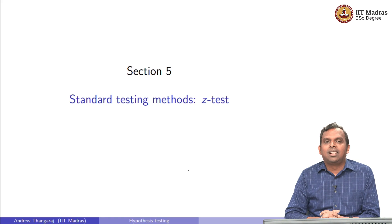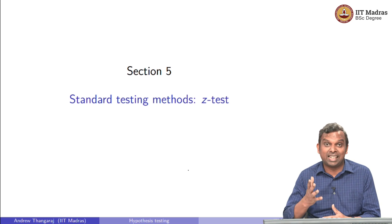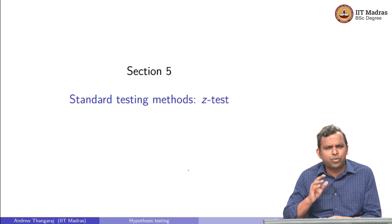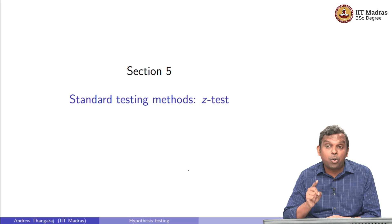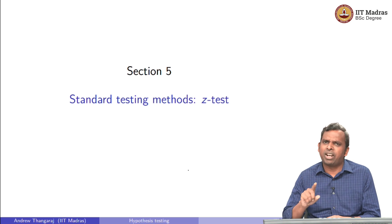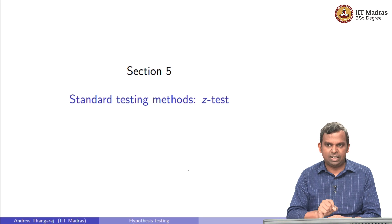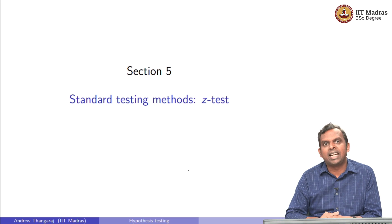Hello and welcome. In this lecture, we are going to look at the first and most standard of all testing methods, which is the Z test. We will describe the test — it is a test for the mean in most cases — and we will also describe how to compute the p-value. I will define it at a suitable place and show you in every example how you go about computing this p-value for a Z test. We will also see a few problems at the end.